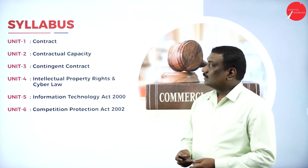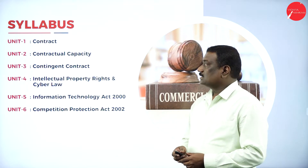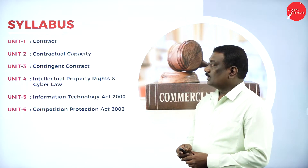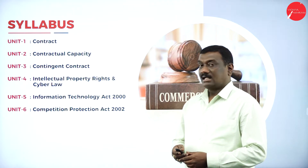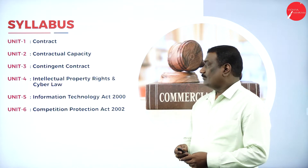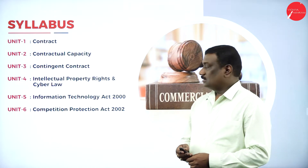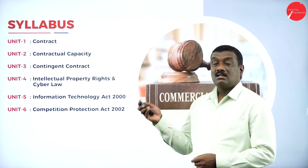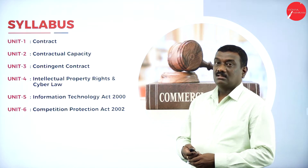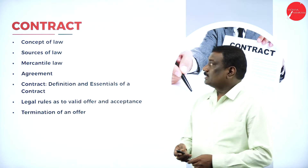The first unit is Contract, second unit is Contractual Capacity, third unit is Contingent Contract, fourth unit is related to Intellectual Property Rights and Cyber Law, fifth unit is Information Technology Act 2000, and the last, sixth unit, is related to Competition Protection Act 2002. These are the six units you need to study this semester in Business Law.